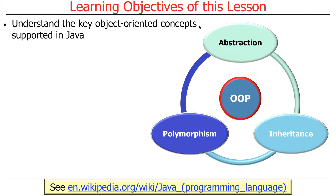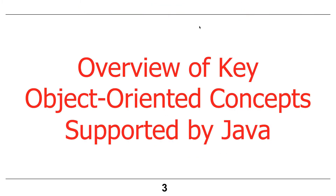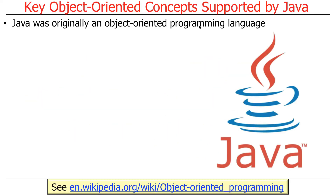So I'm going to go through this really fast — I suspect you know a lot of what I'm about to say. We're going to talk about the key object-oriented abstractions in Java 8, which were also in Java 7: namely abstraction, inheritance, and polymorphism. And these are really at the core of what it means to be an object-oriented language.